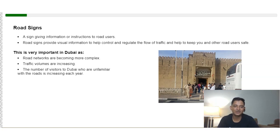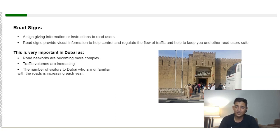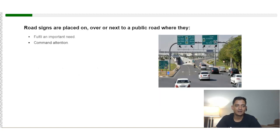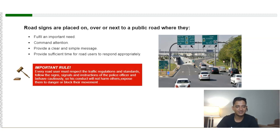Road signs are visual signals giving information or instructions to road users. They help control and regulate the flow of traffic and keep you and other road users safe. This is especially important in Dubai, as road networks are becoming more complex, traffic volumes are increasing day by day, and the number of visitors unfamiliar with the roads is increasing each year. Road signs are placed on, over, or next to a public road where they command attention, provide a clear and simple message, and allow road users sufficient time to respond appropriately.